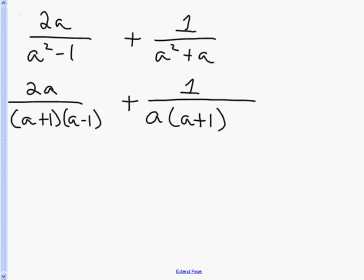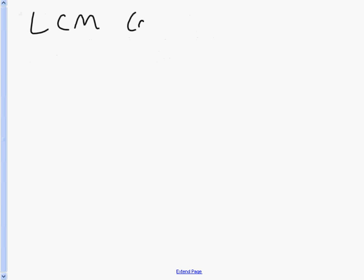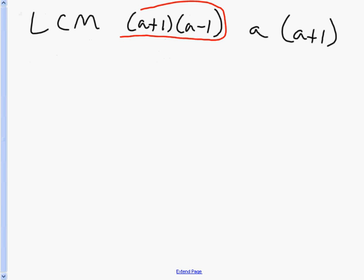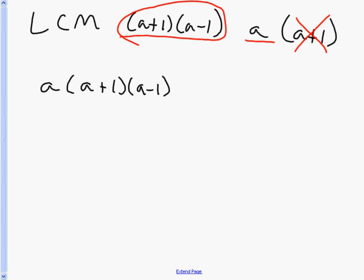My two denominators are (a+1)(a-1) and a(a+1). To find the LCM, I at least need the first piece: (a+1)(a-1). Then I pick up anything new from the second denominator. I already have a+1, so I don't need that, but I don't have a factor of a by itself, so I need the a. So my LCM is a(a+1)(a-1).